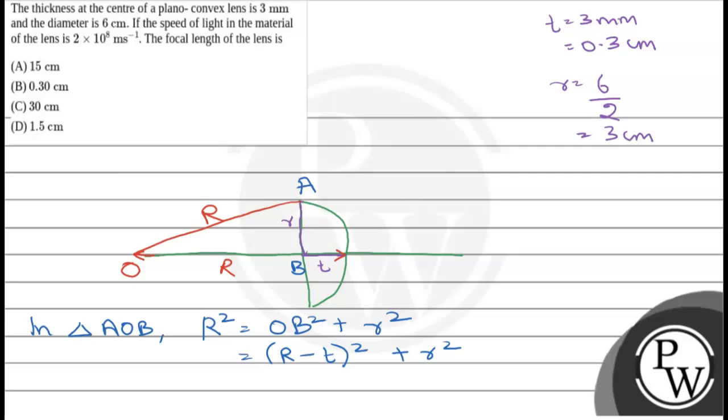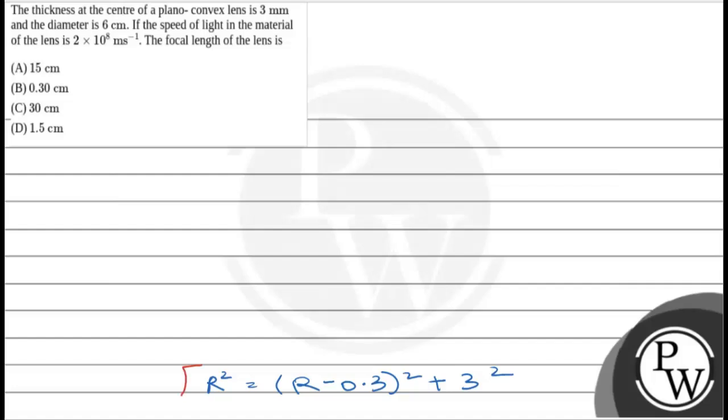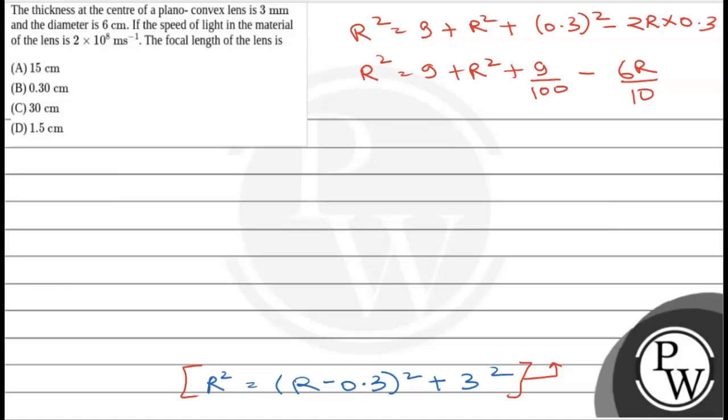So here, R² = (R - 0.3)² + 3². This is a right angle, so R² = 9 + R² + 0.3² - 2R × 0.3. So it will be R² = 9 + R² + 9/100 - 6R/10. Simplifying, 6R/10 = 9 + 9/100.